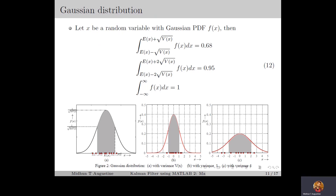Now let us consider two different examples. The first is a Gaussian random variable with mean 0 and variance 1, shown in figure 2b. Here root V of x equals 1, so the interval is from minus 1 to plus 1. So if you take the value of the random variable 10 times, around 7 times it will be between minus 1 and plus 1. In the second example we consider a random variable with mean 0 and variance 4, shown in figure 2c. Here root V of x equals 2, so around 7 times out of 10 the random variable takes a value between minus 2 and plus 2. This clearly shows that if the variance is more, the random variable is more spread, and if the variance is less, it is more centered around its mean. This explains the significance of minimum variance estimation.